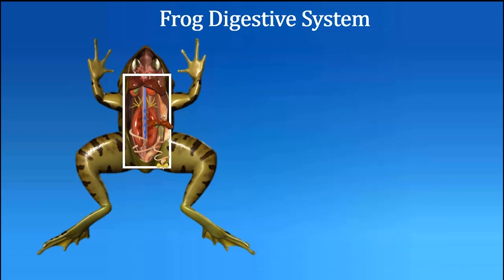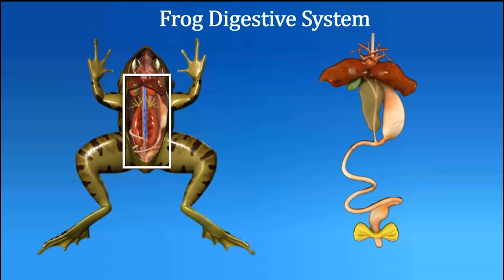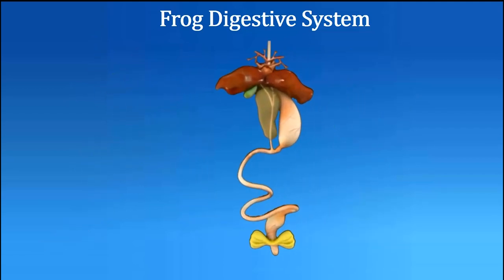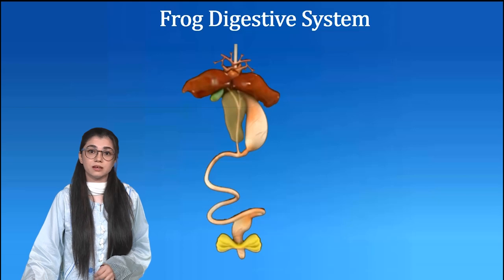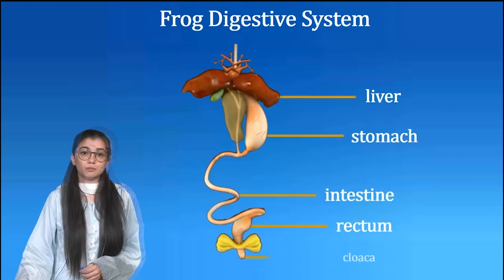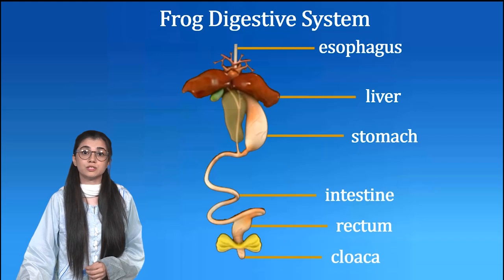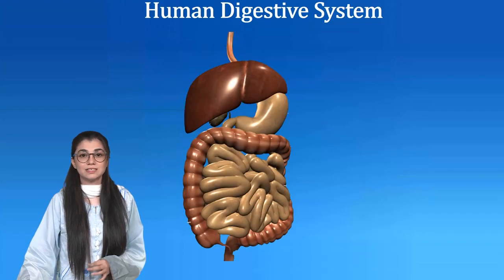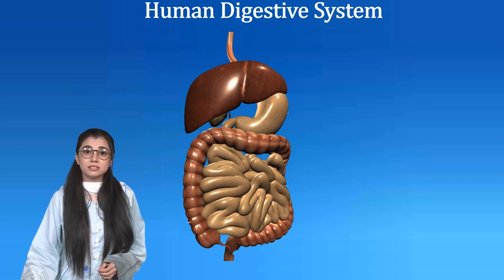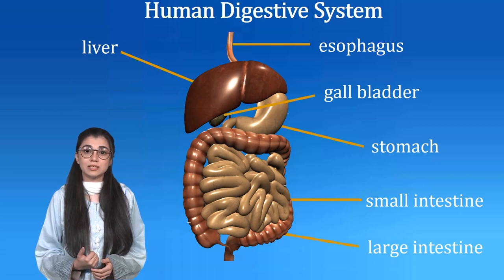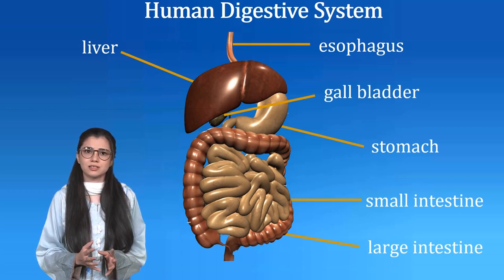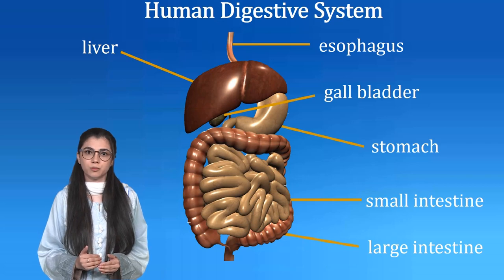The second system is the digestive system. Both frog and human have a similar digestive system. They have a similar stomach working for the process of food. The liver produces substances that help break things down. The gallbladder holds bile from the liver. Both also contain the small and large intestines. The small intestine works to absorb nutrients into the bloodstream, while the large intestine is the waste collector of the body, where waste settles into feces.